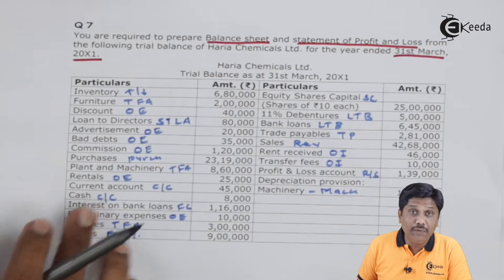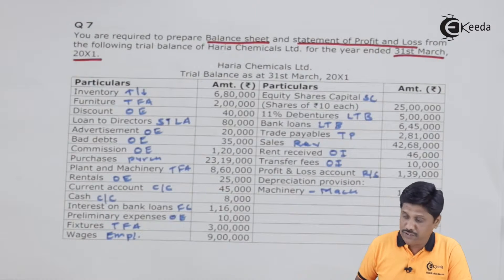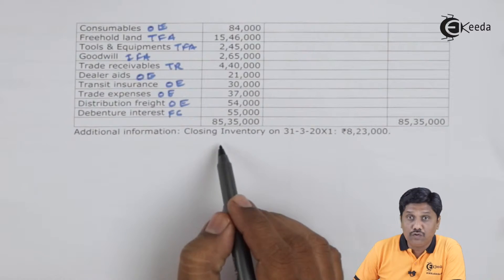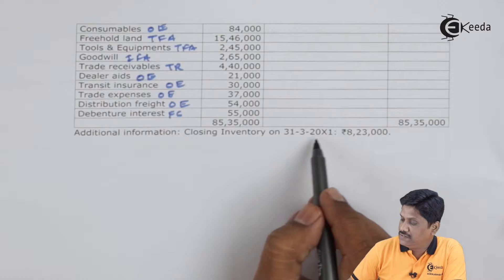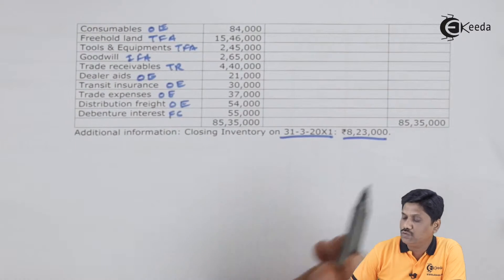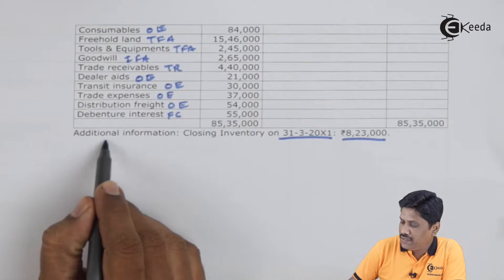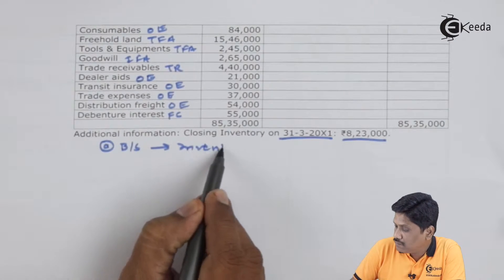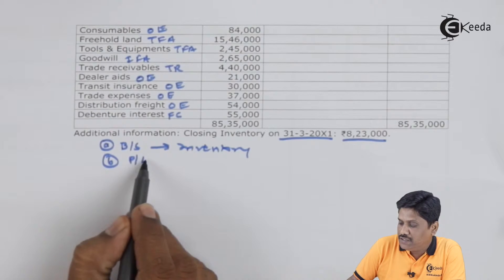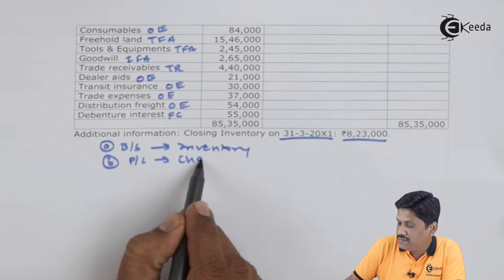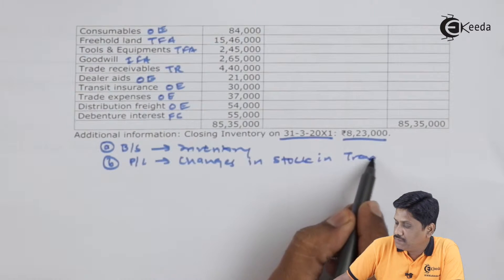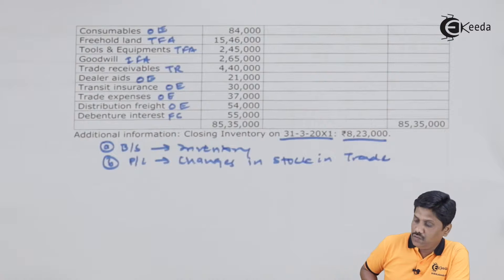In this way we have completed the trial balance reading of this question. Let's see the adjustment — only a single adjustment is provided. Closing stock or closing inventory on 31st March 20X1 is provided. Effect A: it will be placed in the balance sheet as inventory. Effect B: it will be recorded in the P&L account as changes in stock in trade. That's it — only this much for this question. It's a small question and we will solve it.